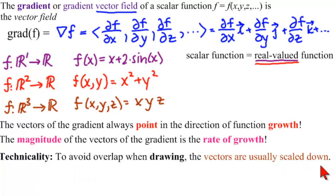So what they do is, in order to avoid overlapping when drawing, the vectors are usually scaled down. So they're all multiplied by like, say a third or a tenth or something like that.